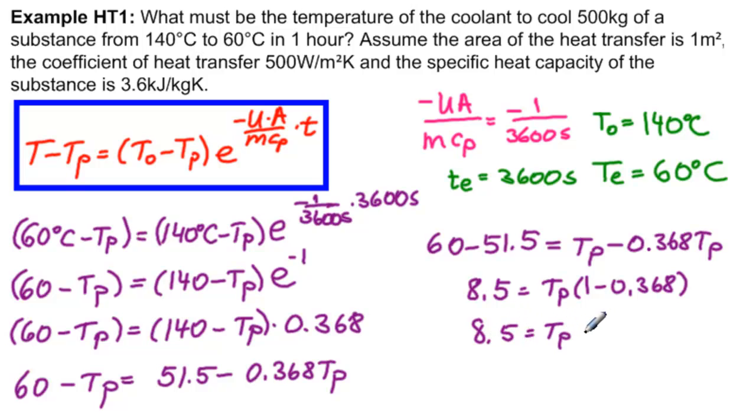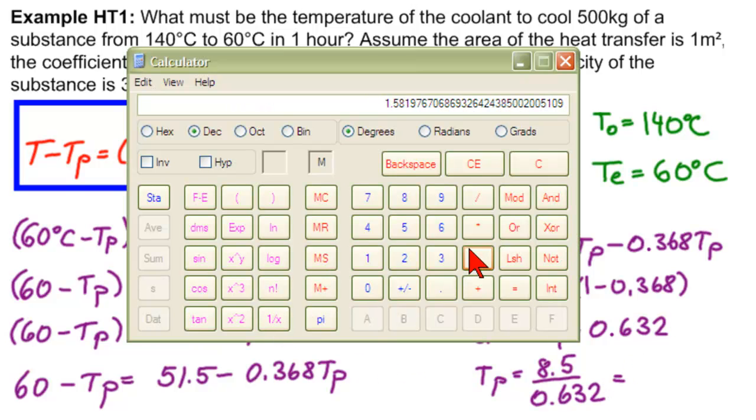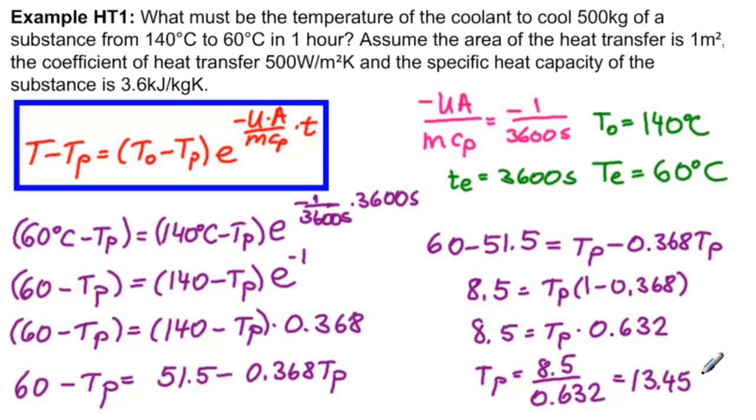So TP equals 8.5 divided by 0.632, which equals 13.45 degrees Celsius. That is our final answer, the temperature of the coolant. That makes sense. It has to be under 60 to cool it, and it has to be reasonably low to cool reasonably fast. In one hour, it has to reduce it by 80 degrees. So in one hour, we are going to use a coolant that's 13.45 degrees Celsius to cool our substance from 140 to 60.